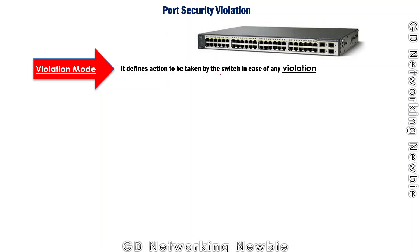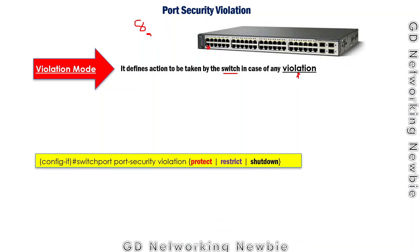We have different violation modes on the ports which we can configure. These modes define the action to be taken by the switch in case of any violation. A violation can occur when a port is configured to accept frames from one specific host with a specific MAC address, but a different host tries to access it. It can also occur if a port is configured to learn only 8 MAC addresses but receives a 9th — that is also considered a port security violation.